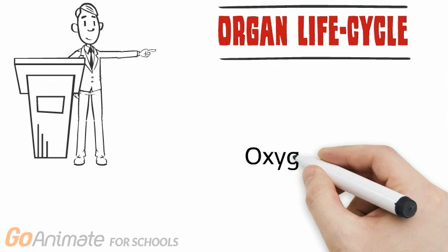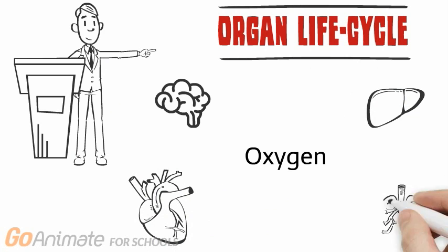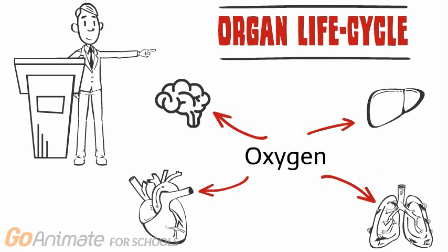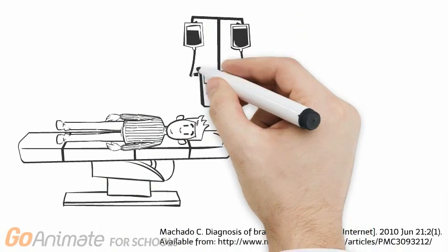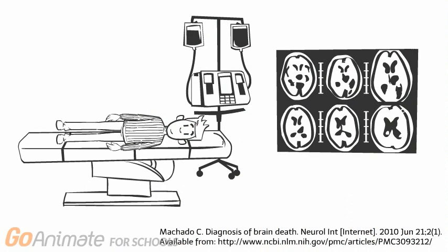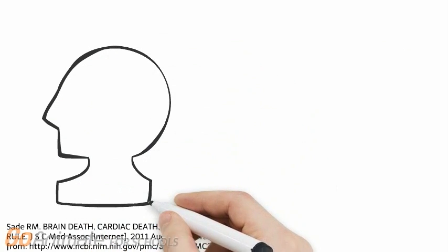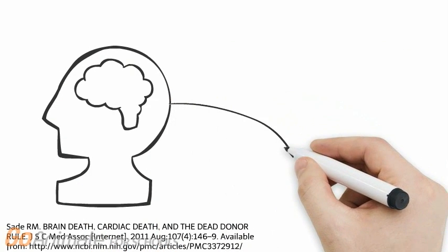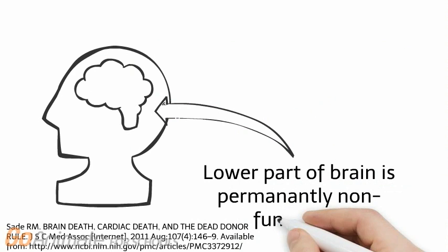Moving on to the organ life cycle. Because organs require a constant supply of oxygenated blood for sustainability, most donations happen following brain death, where the heart is still pumping blood, but the individual has lost all brain function and is put on life support. The current updated national guidelines for declaring someone brain dead is when the lower part of the brain, involved with breathing, wakefulness, and other autonomic functions, is permanently non-functional.